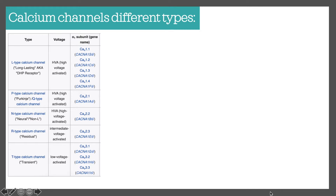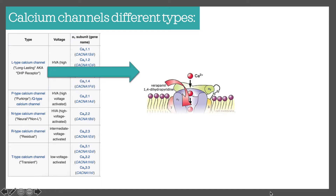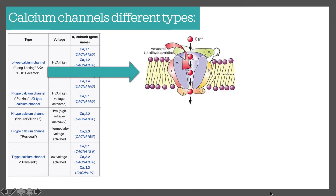The ones that pharmacologists usually work with mostly are L-type calcium channels, because they're found predominantly in the heart, vascular smooth muscle, as well as the GIT, uterus, and various other organs. The L-type calcium channel is usually composed of an alpha-1, alpha-2, gamma, delta, and beta subunits.